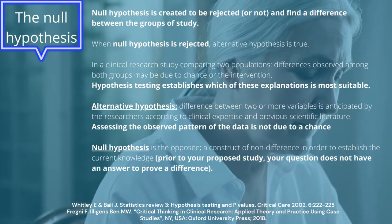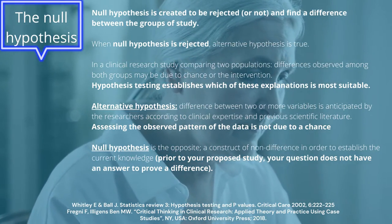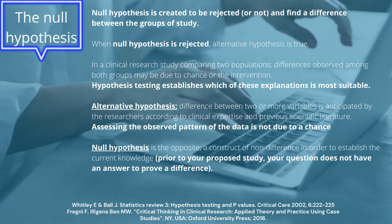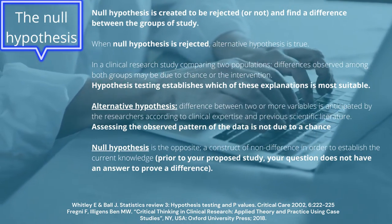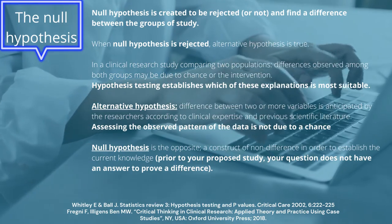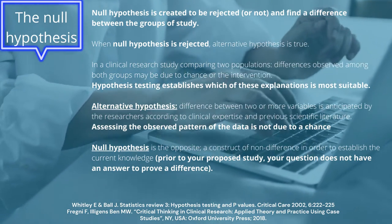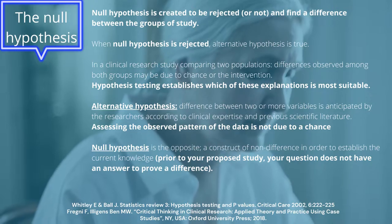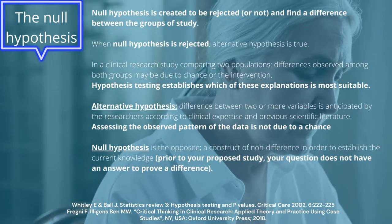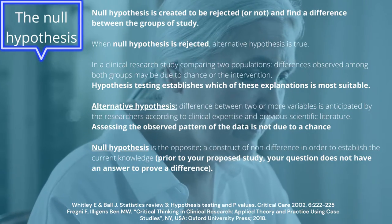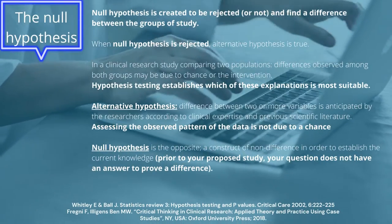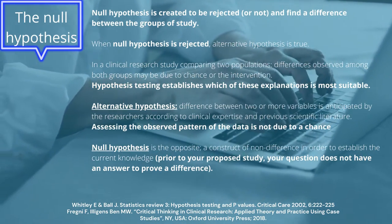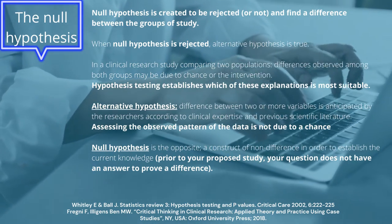Meanwhile, the null hypothesis is a construct based on the opposite of the alternative hypothesis, where we say there is no difference between the observations of both populations studied. This is, by all means, considering the actual knowledge where, prior to your proposed study, your research question doesn't have an answer to prove that there's a difference. Therefore, the null hypothesis is accepted up until the rejection performed by the statistical analysis of your research project.